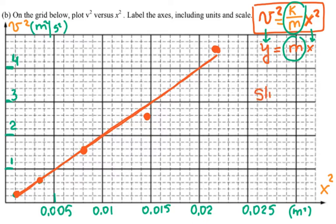the slope m is equal to k over, in this case, it's mass.